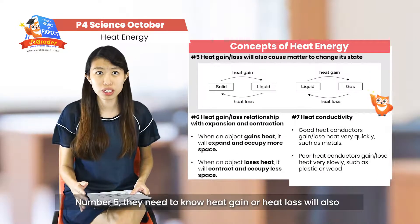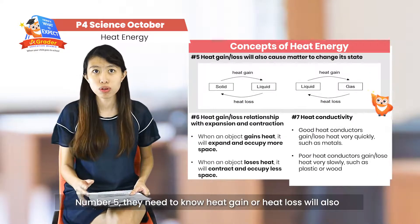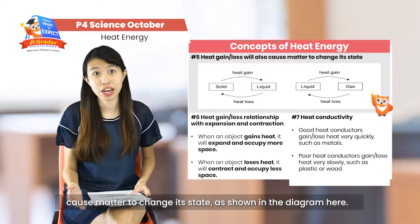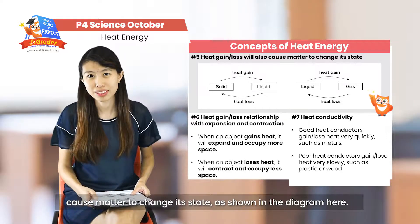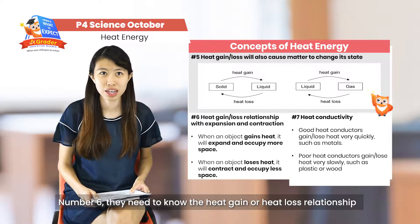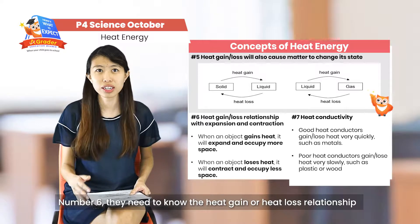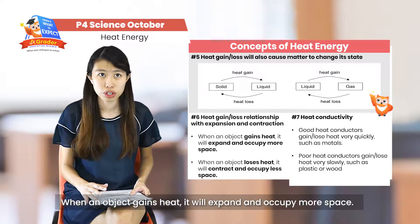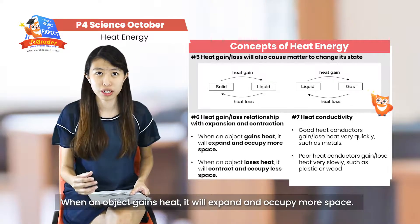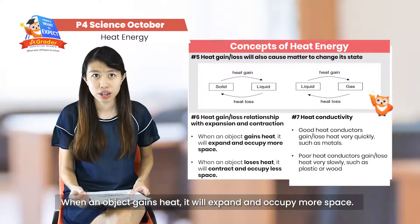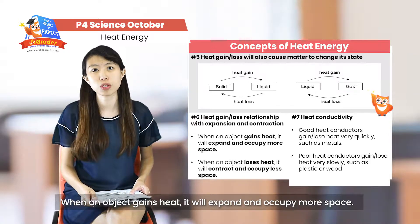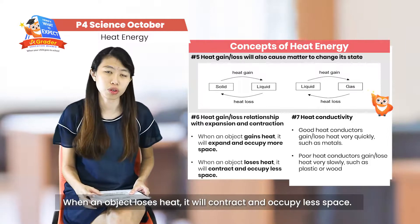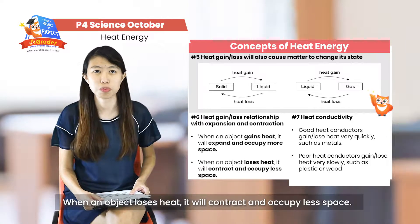For number five, they have to know that heat gain and heat loss will also cause matter to change its state, as shown in the diagram here. And for number six, the relationship between heat gain and heat loss with expansion and contraction: when an object gains heat, it will expand and occupy more space; when an object loses heat, it will contract and occupy less space.